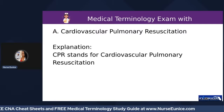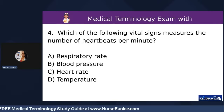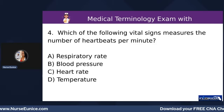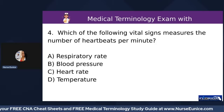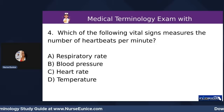CPR — cardiovascular referring to the heart, pulmonary referring to the lungs, resuscitation — the two skills you're going to be performing are chest compressions and rescue breaths. Number four: which of the following vital signs measures the number of heartbeats per minute? A) respiratory rate, B) blood pressure, C) heart rate, or D) temperature.